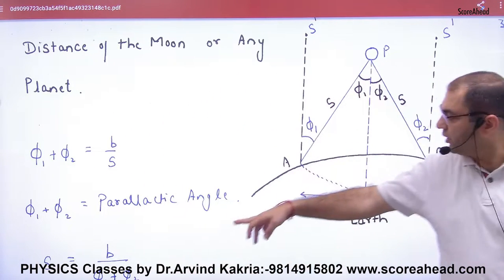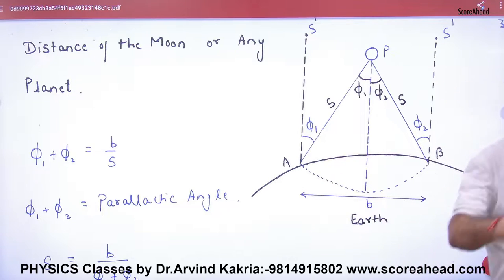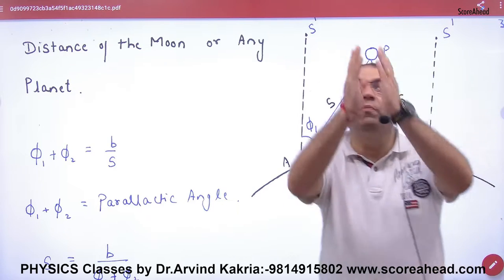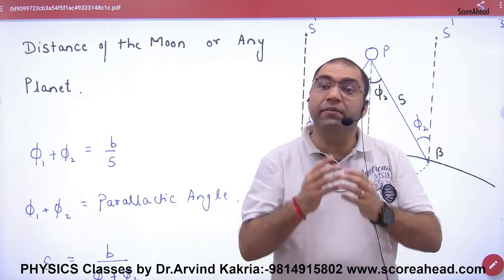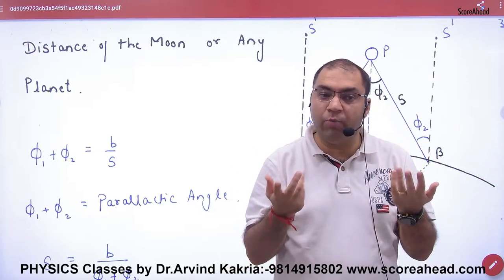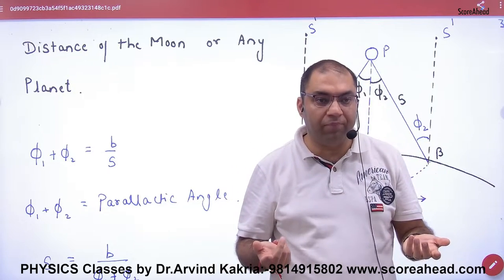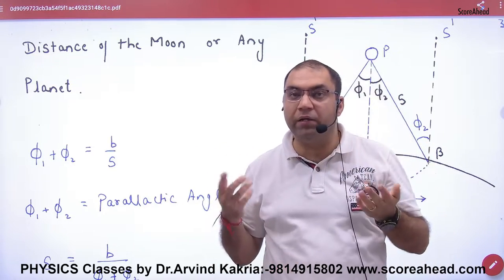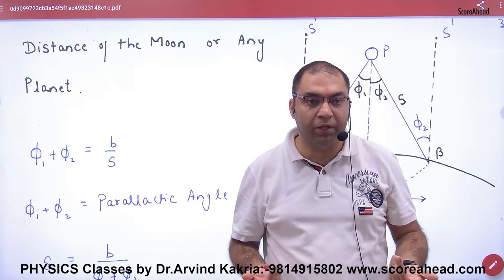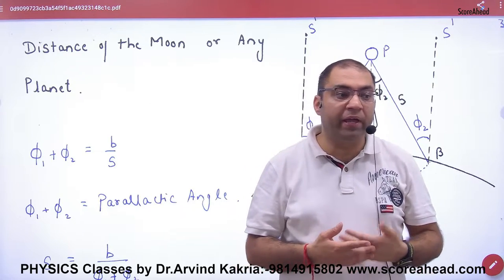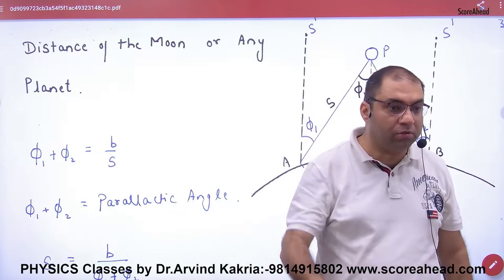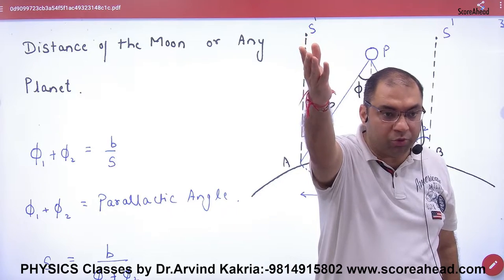Understand — this is your Earth. Now if I try to see the Moon using parallax with my two eyes, I can't do the same thing, because the distance between my two eyes is so small compared to the Moon's distance that it is almost zero.